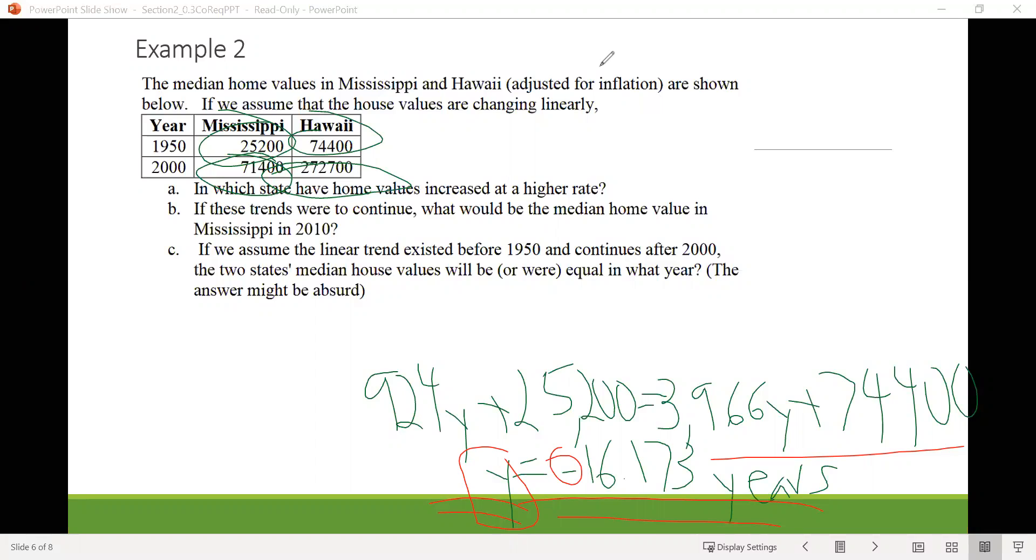And the question we're trying to answer here is asking us, in what year? So we actually want to know the year, not how many years. So what will we do? Well, since 1950 is kind of our baseline, we'll take this answer here, this negative 16.173 and add it. And when we do that, we get 1933.827. So it looks like the home values were the same between the two states in 1933.